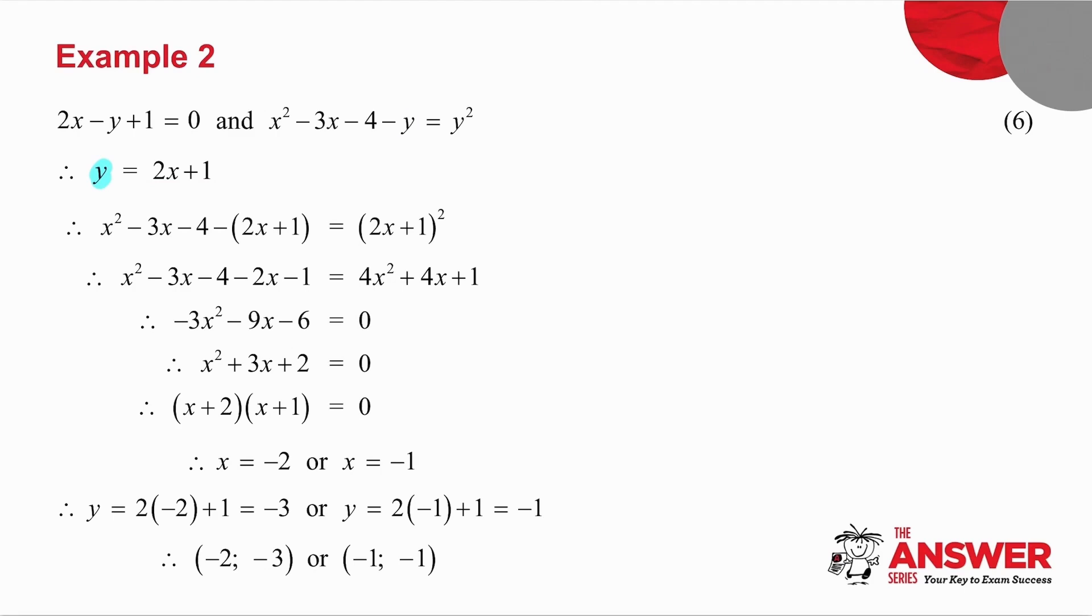That y is exactly the same as these y's. So in place of these two y's, I'm going to put 2x plus 1. And that is what I get. Multiply the brackets. Collect like terms. You'll notice that you can divide through by minus 3. So divide everything through by minus 3. Factorize and solve for x. Take your values of x and substitute back in here to get the corresponding values of y. And your solutions are x is minus 2, y is minus 3, or x is minus 1 and y is also minus 1.